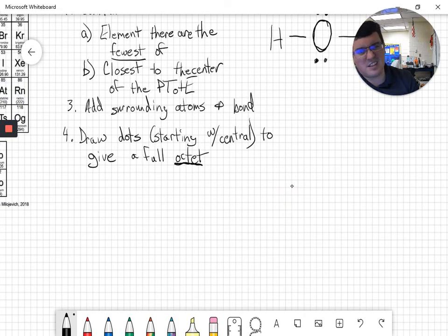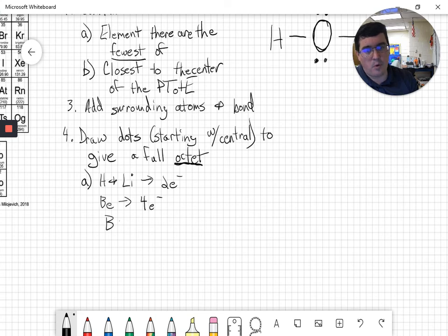There are exceptions to the octet rule. I really don't like calling it the octet rule. It's really just a step, the octet step. Hydrogen and lithium, believe it or not, if you ever see lithium in one of these, they only want two electrons. Beryllium stops at four electrons. Boron stops at six electrons.